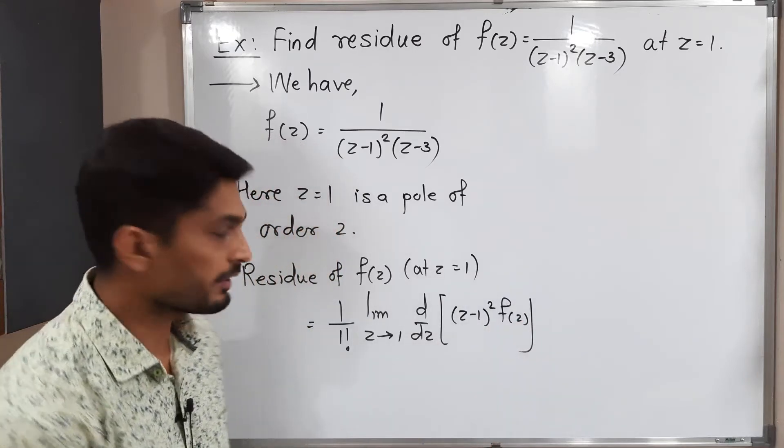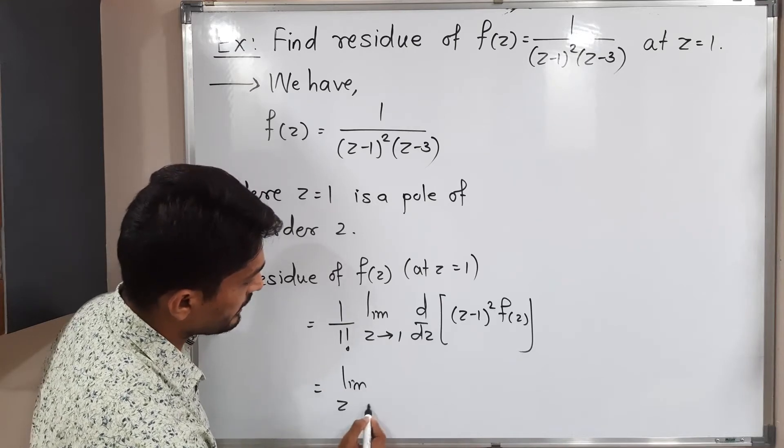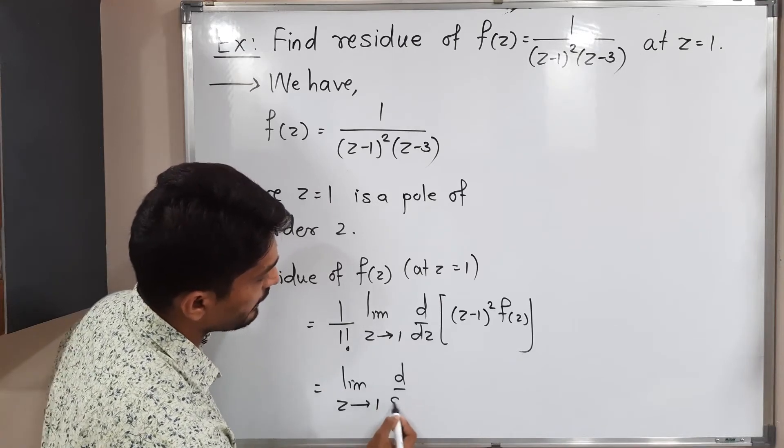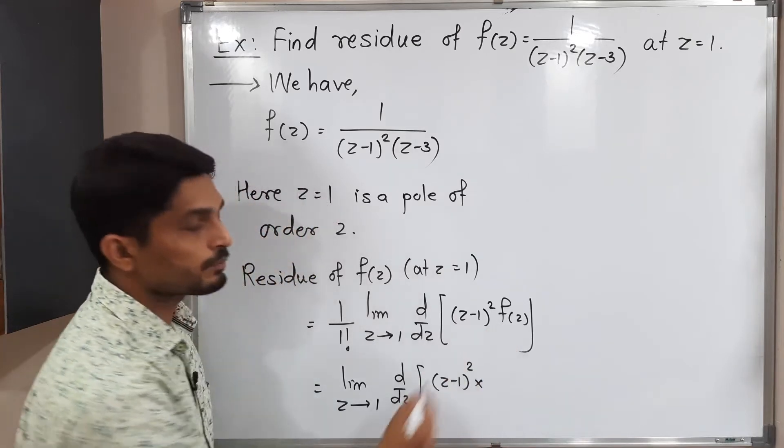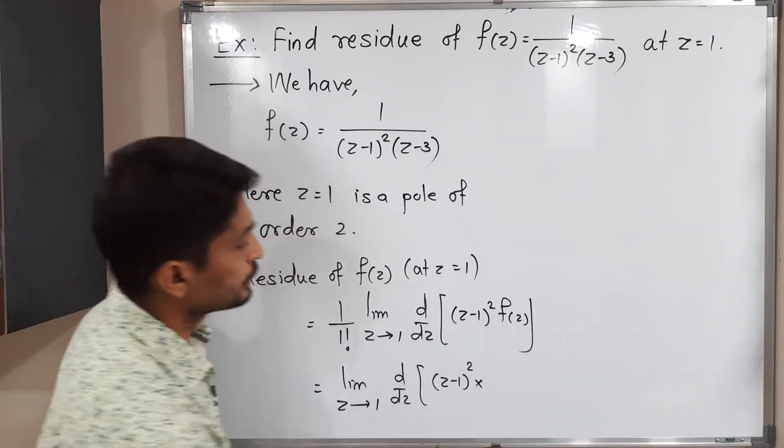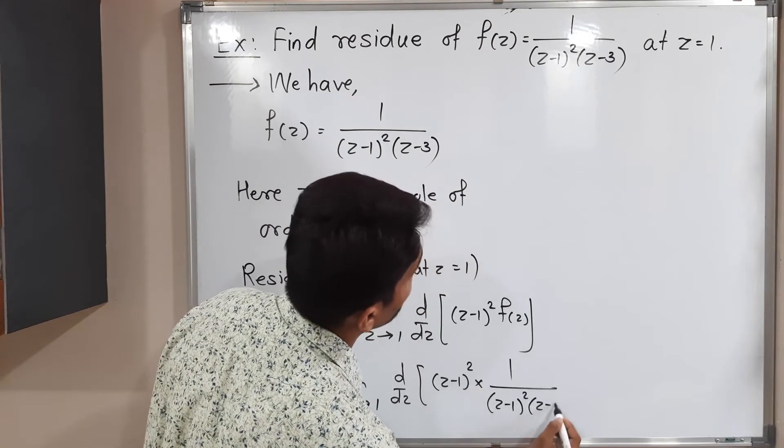Let us put the value of f(z) which is 1 upon (z minus 1) squared (z minus 3).